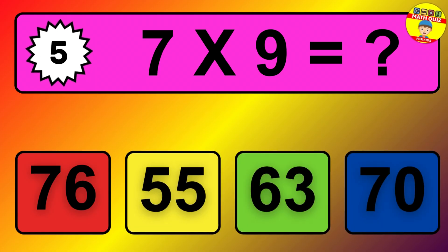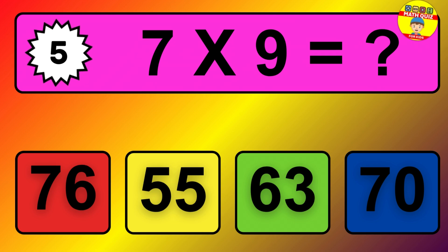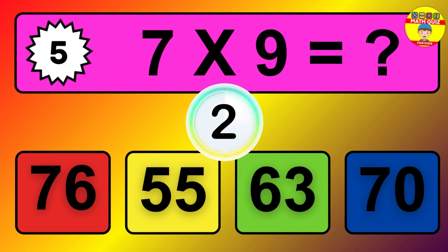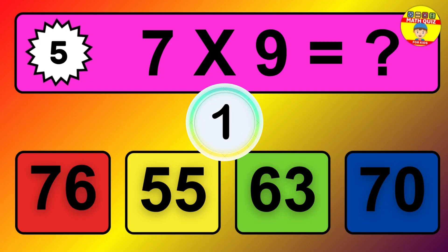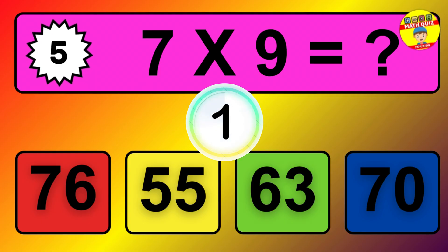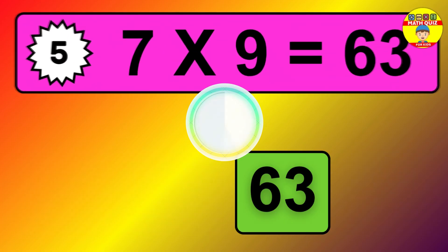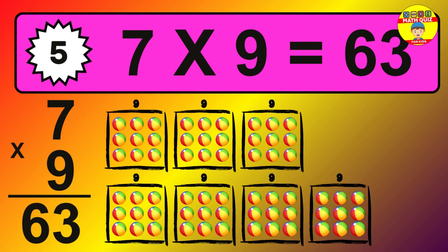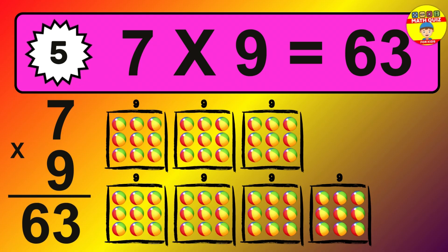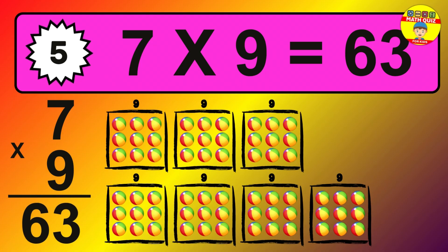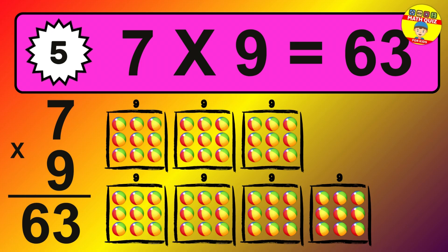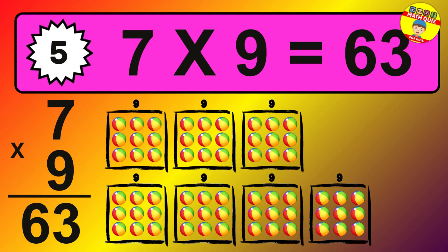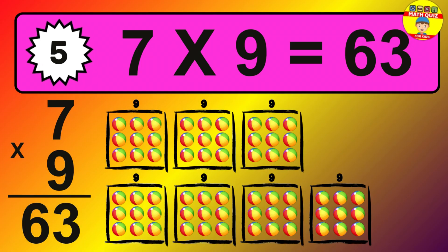Question 5. 7 times 9 equals what? The answer is 7 times 9 is 63. To calculate, we have 7 groups with 9 balls each one. So, how many balls do we have? 63 balls.